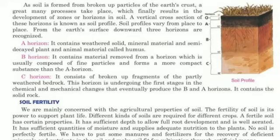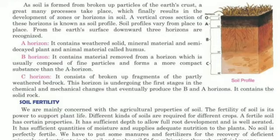The second is the B horizon. It contains material removed from the A horizon, which is usually composed of fine particles and forms a more compact substance than the A horizon. The third is the C horizon, which consists of broken-up fragments of partially weathered bedrock. This horizon is undergoing the first stage of chemical and mechanical changes.